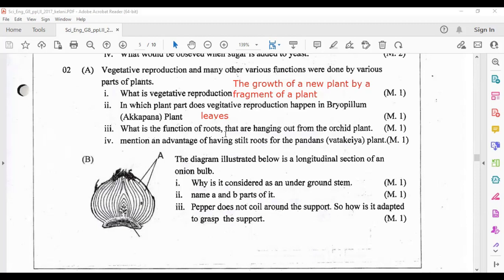What is the function of roots that are hanging out from the orchid plant? The function of them is absorb moisture from the atmosphere. Mention an advantage of having stilt roots for the pandanus plant. Normally stilt roots are coming out from the stems of the plants, so the function of them is the support to the stem.